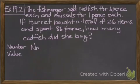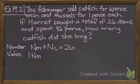We know that she had a total of 26 items. The number of mussels and the number of codfish equals 26. We know that the mussels were 1 pence each and the codfish were 6 pence each, and that was a total of 86 pence.